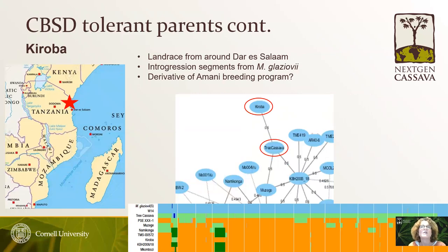Kiroba sometimes shows severe leaf symptoms but does not show root symptoms even under high disease pressure. Known as a landrace from around the Dar es Salaam area, resequencing data has identified Manihot glaziovii introgression segments in Kiroba. It has a close relationship with tree cassava, a Manihot esculenta–Manihot glaziovii hybrid, suggesting it may be an Amani derivative. The last resistant genotype, AR40-6, was imported from CIAT around the year 2000, and unfortunately we don't have reliable long-term performance data on it.